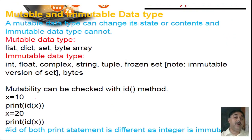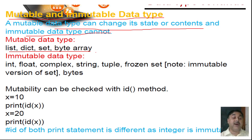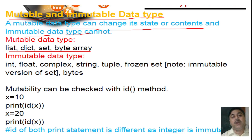When we have different types of data types, we have mutable and immutable data types. Mutable data type means a data type that can change its states or content. Immutable means that cannot change. Mutable data types include list, dictionary, set, and byte array — all these data types can change their states or content.